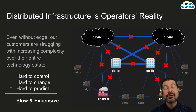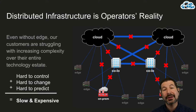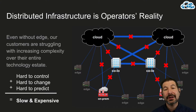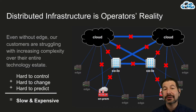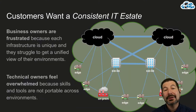What we have found, and the reason this is so important, is that if every customer was collaborating a little bit more, we would all improve, because distributed infrastructure is the operator's reality. When you're trying to create a consistent operational experience across your entire IT estate without the right tooling, it's hard to control, hard to change, and hard to predict what's going to happen in your infrastructure. That makes it slow and expensive, and we don't see that as acceptable.